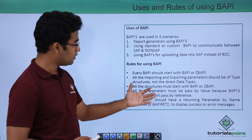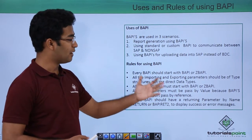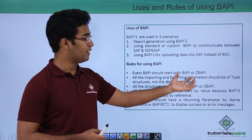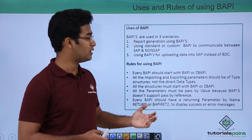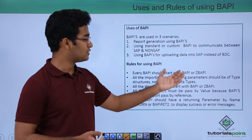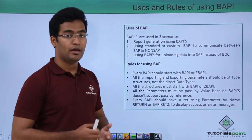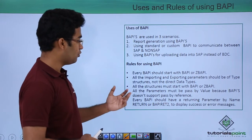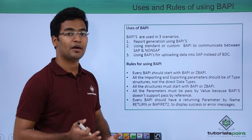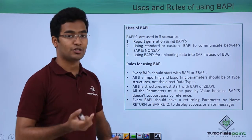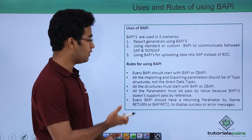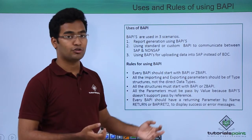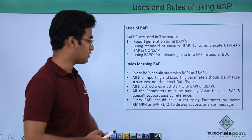There are some rules here. Every BAPI should start with BAPI or ZBAPI. The predefined BAPIs that SAP has provided — the standard BAPIs — start with BAPI, and the custom ones we make start with ZBAPI. Moreover, all importing and exporting parameters should be of the type structure and not direct data types. We have to pass the structure as it is, and the structure name should also start with BAPI or ZBAPI.